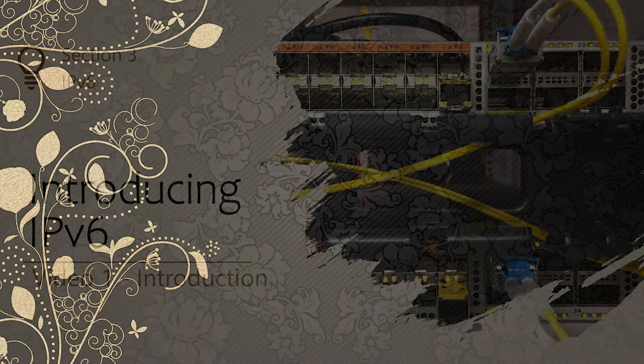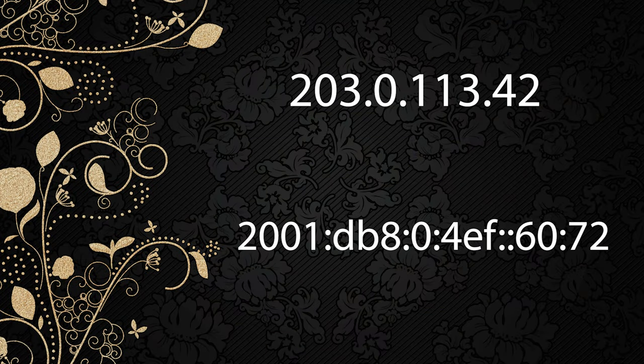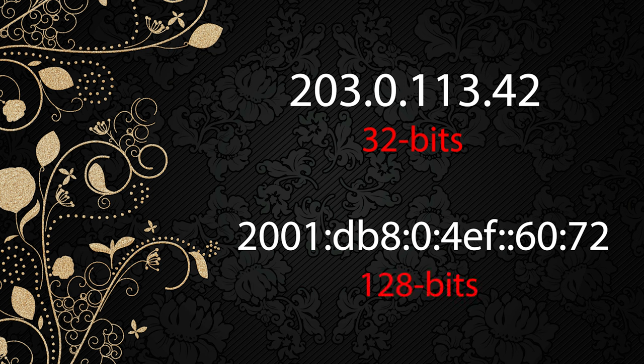One of the most obvious changes in IPv6 is the format of addresses — we'll see how they work in detail in the next video. The reason for this change is the size of the address space. IPv4 addresses are 32-bit numbers, while IPv6 addresses are 128 bits. This might sound like it's four times bigger, but when you think about how binary numbers work, you'll realise that IPv6 addresses are a lot bigger.